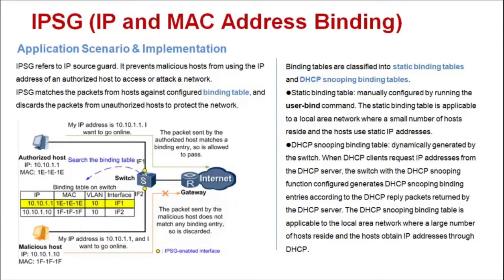This is a binding table. A binding table contains multiple entries, which record the binding relationships between source IP addresses, source MAC addresses, VLAN IDs, and inbound interfaces.